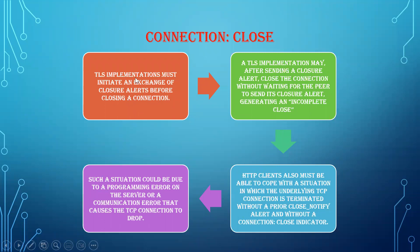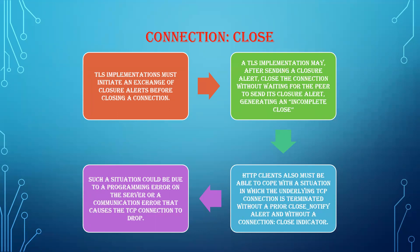When connection closure comes, an HTTP client or server can indicate the connection close by the message 'connection close,' indicating that the connection is closed. The closure of an HTTP connection involves a TLS close, which involves closing the TCP connection. At the TLS level, the proper way to close a connection is by sending a close notify alert. After sending that close notify alert, TLS completely closes the connection and waits for the other side to send the closure alert. If the close notify is sent by both the server and the browser, the connection is completely closed.